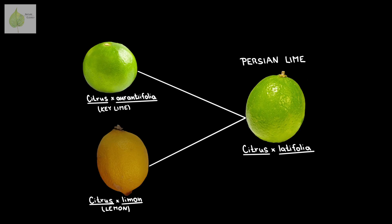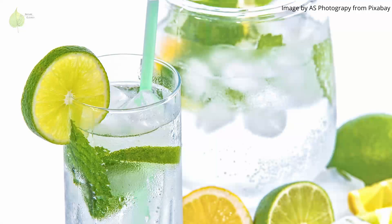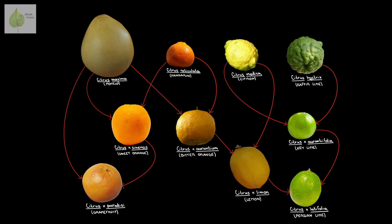If we take key lime and cross it with lemon, we in turn get a Persian lime, Citrus × latifolia, which is the most commonly grown commercial lime and the one you're probably most familiar with. These are just a few examples of the most commonly known citrus to give you an idea about their tangled interrelationships.